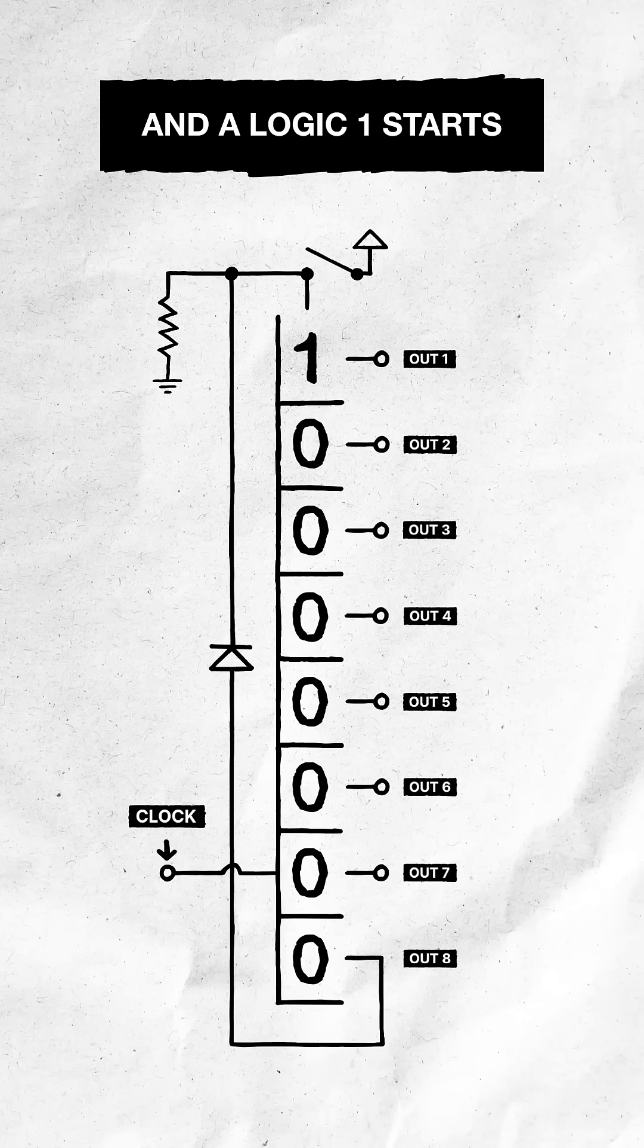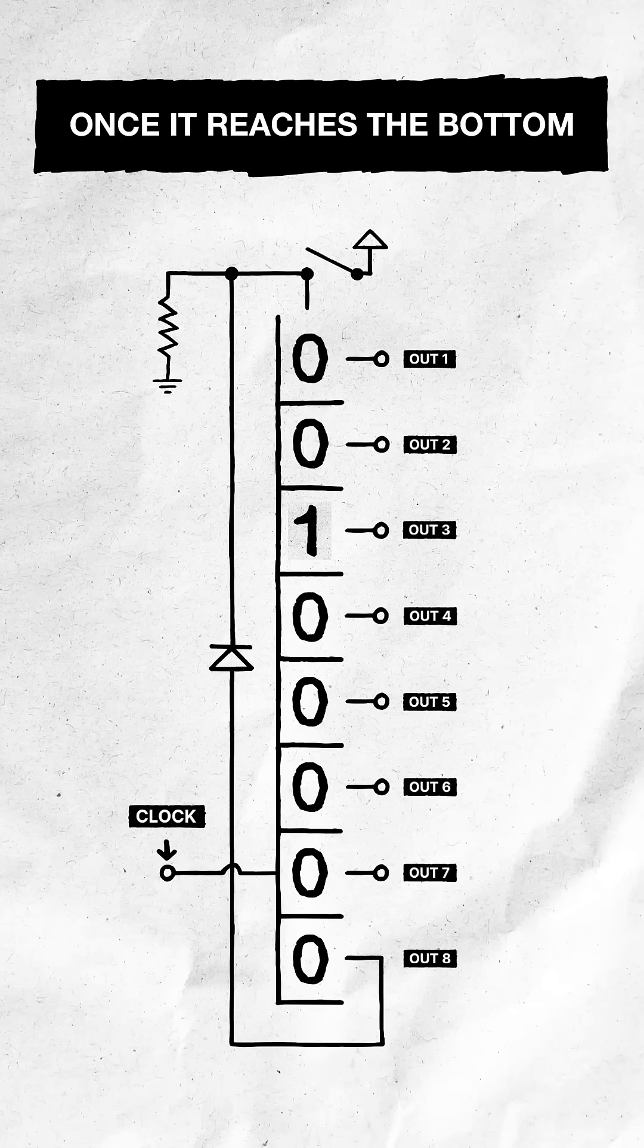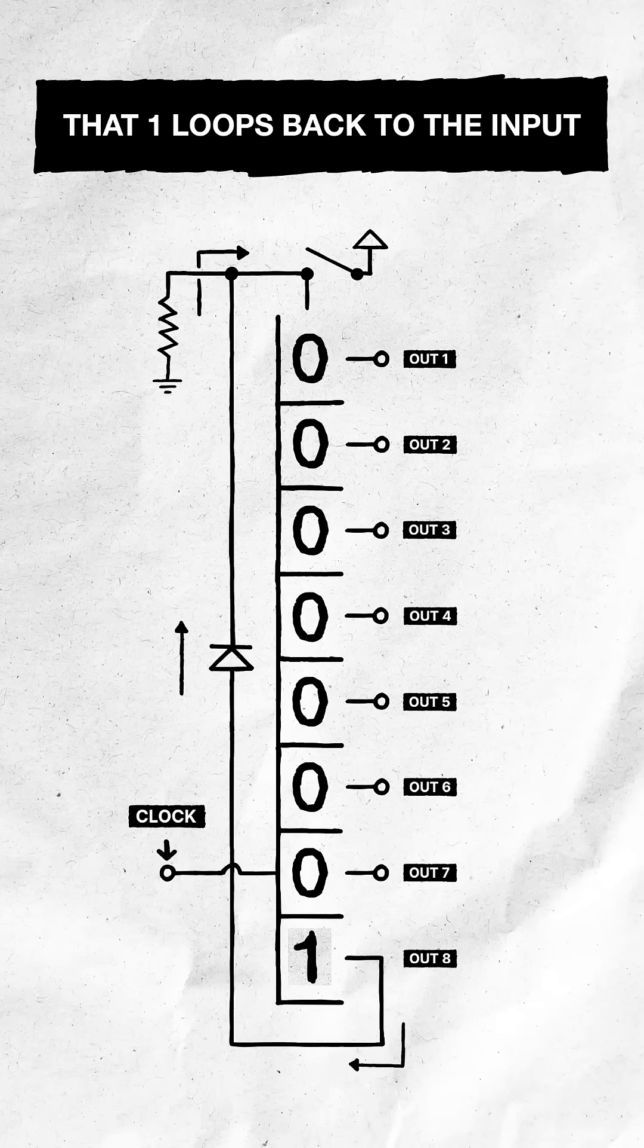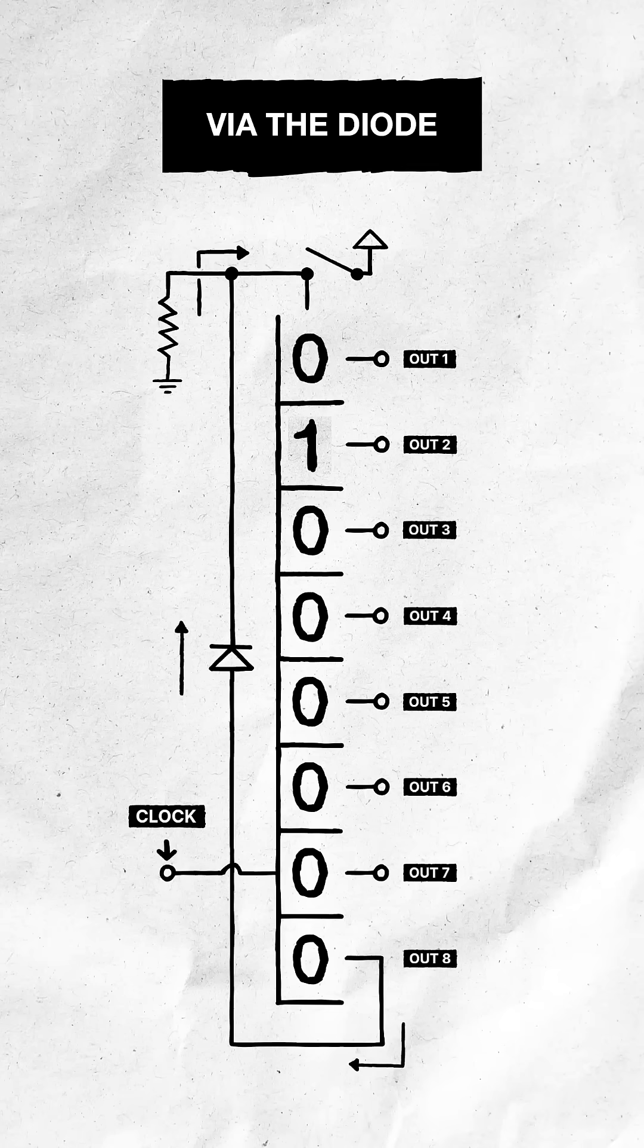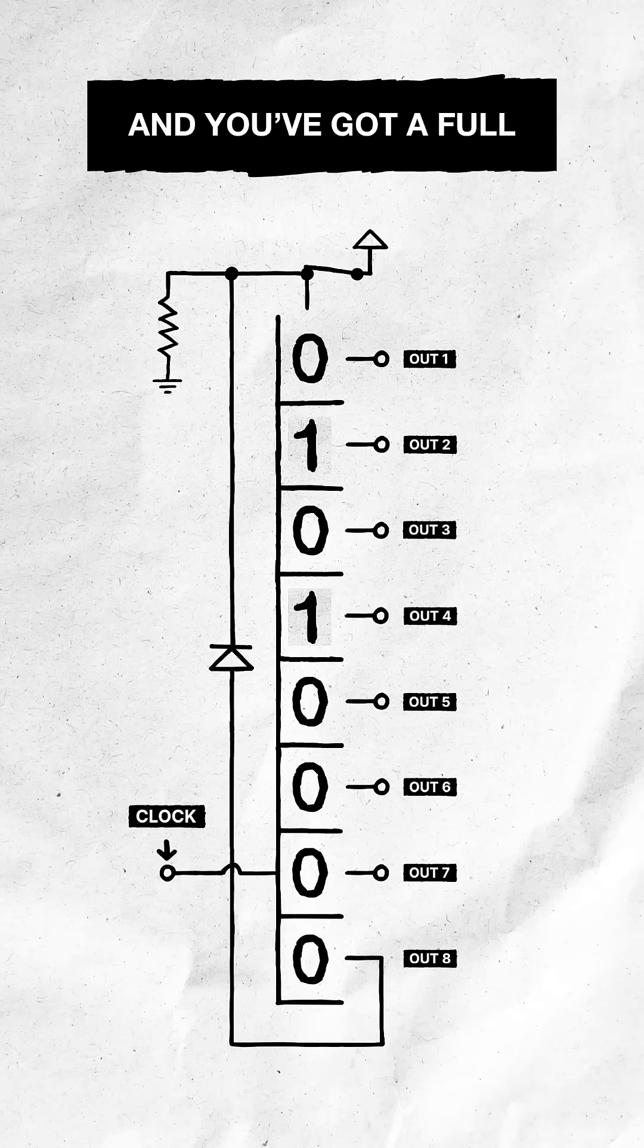Press the button, and a logic one starts traveling through the chip. Once it reaches the bottom, that one loops back to the input via the diode. Tap the button a couple more times, and you've got a full drum pattern rotating through the chip.